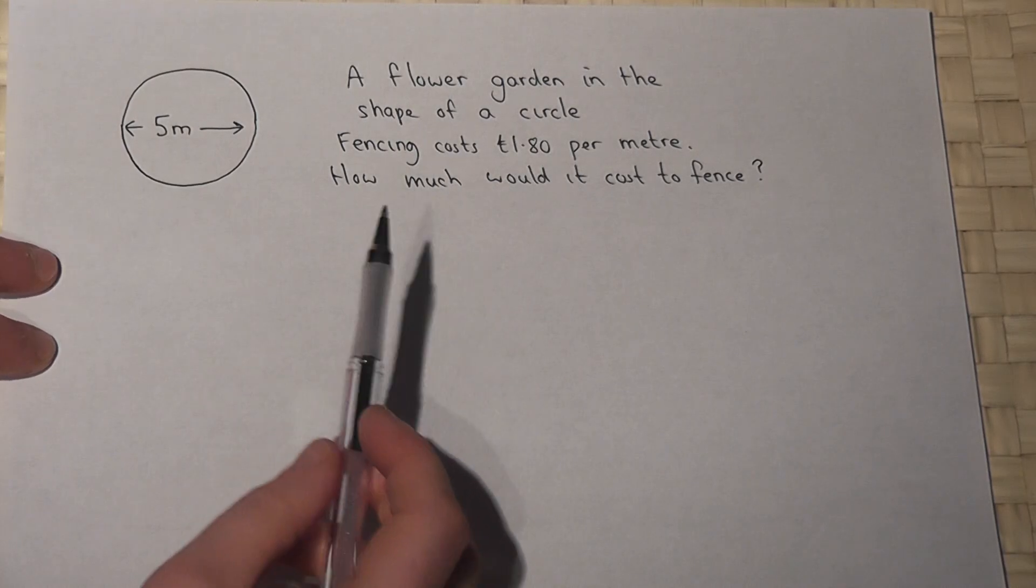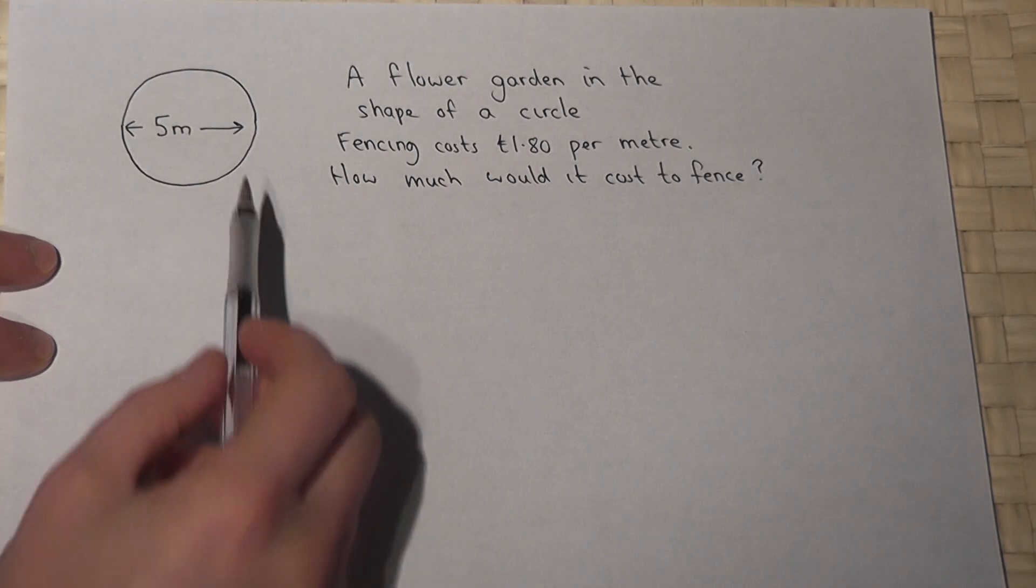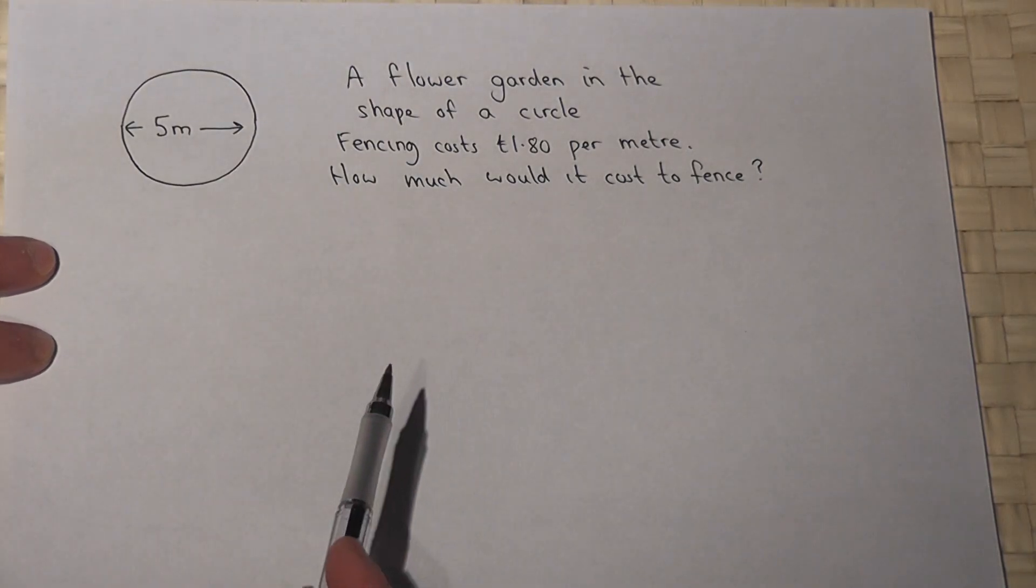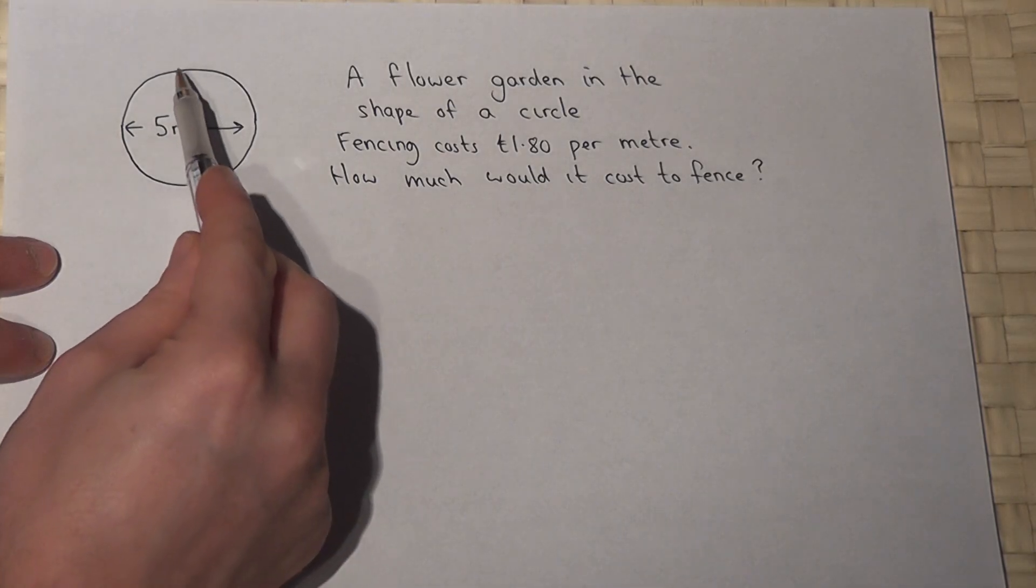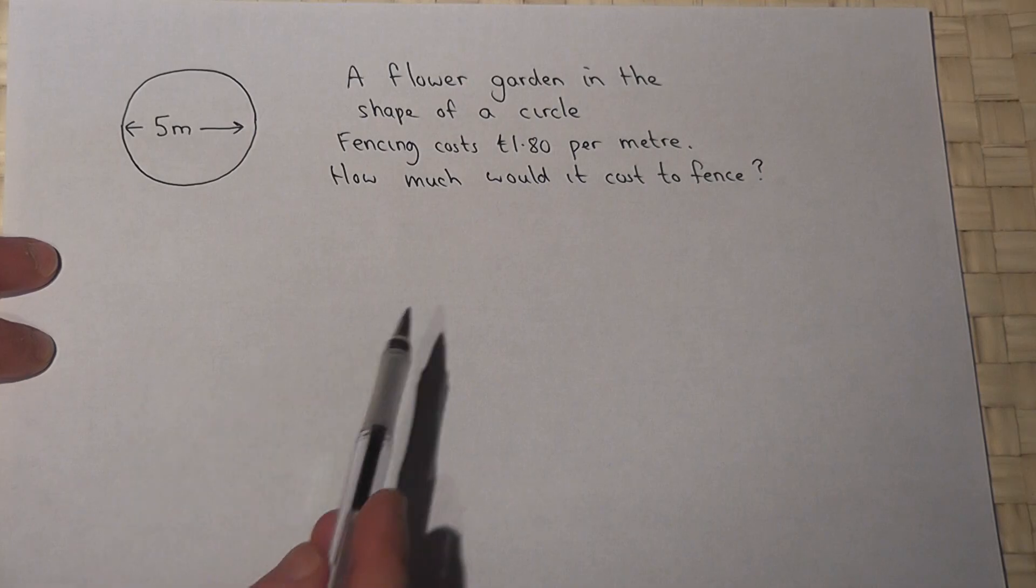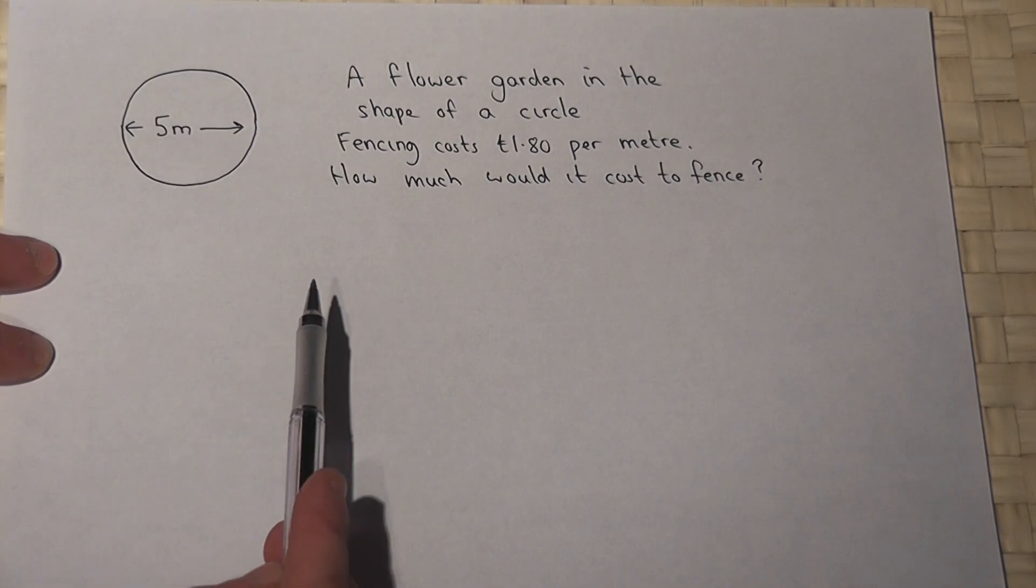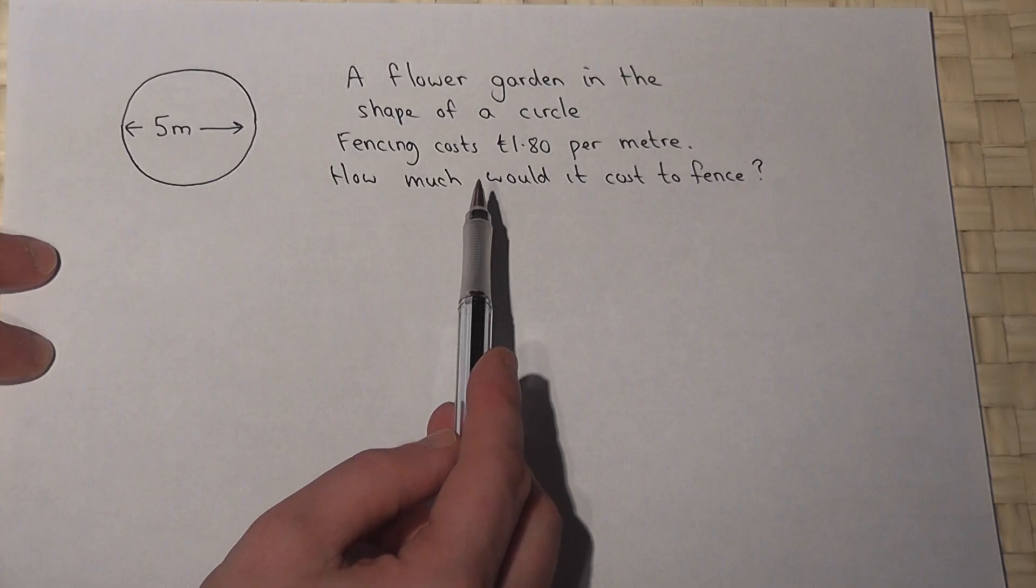In this question, someone called John has got a flower garden, and this flower garden is in the shape of a circle, and he wants to put some fencing around his garden, and the cost of the fencing is £1.80 per metre.